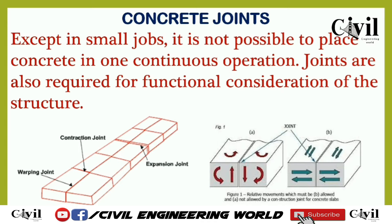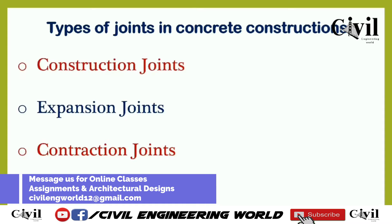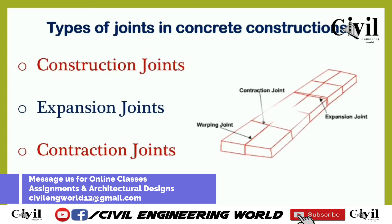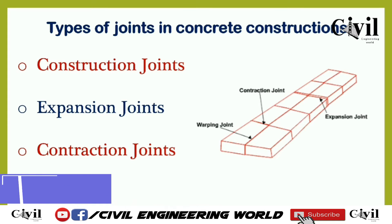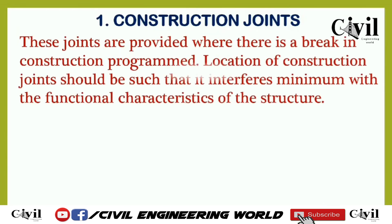Broadly speaking, we have three different types of construction joints. First is construction joints, second is expansion joints, and third is contraction joints. Depending upon the situation and the type of construction, we provide different types of joints.